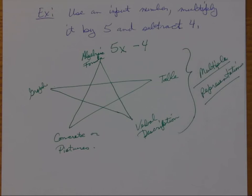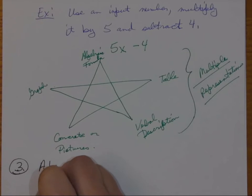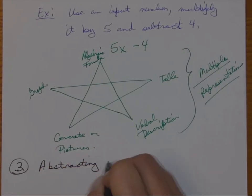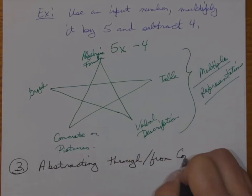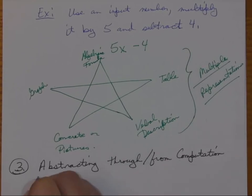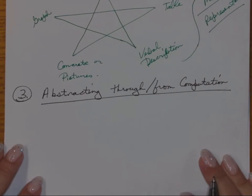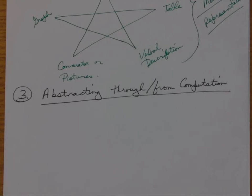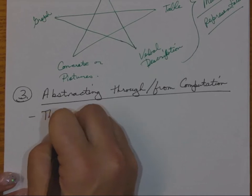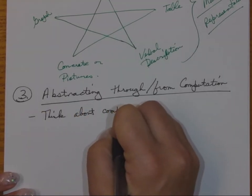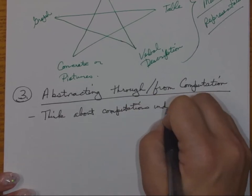The third building block of algebraic reasoning is abstracting from computation. This is a skill we're going to spend time developing — some people can just see a pattern and develop abstract thoughts naturally, while others really struggle. For instance, how do you know something is linear or quadratic just by looking at a table of values? We're going to get examples and do some work with it. What we want to do is think about our computations independently of a particular specific number.